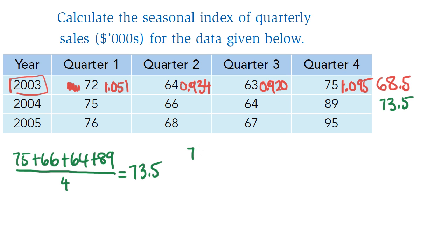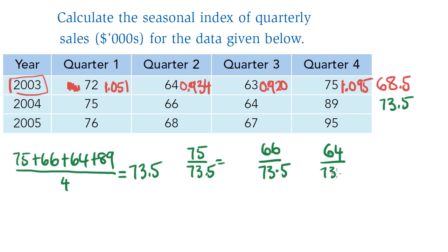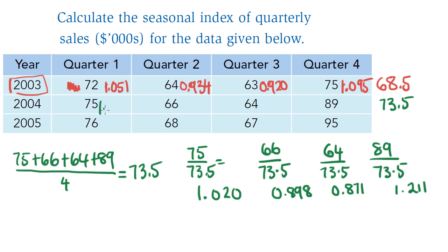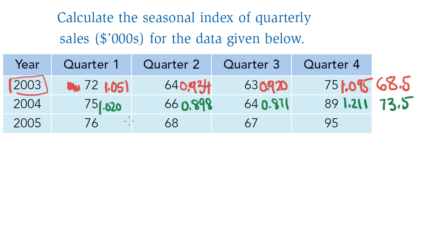Now let's figure out the yearly proportions for 2004: 75 divided by 73.5, 66 divided by 73.5, 64 divided by 73.5, and 89 divided by 73.5 — filling those in gives me 1.020, and now I have yearly proportions for 2004.